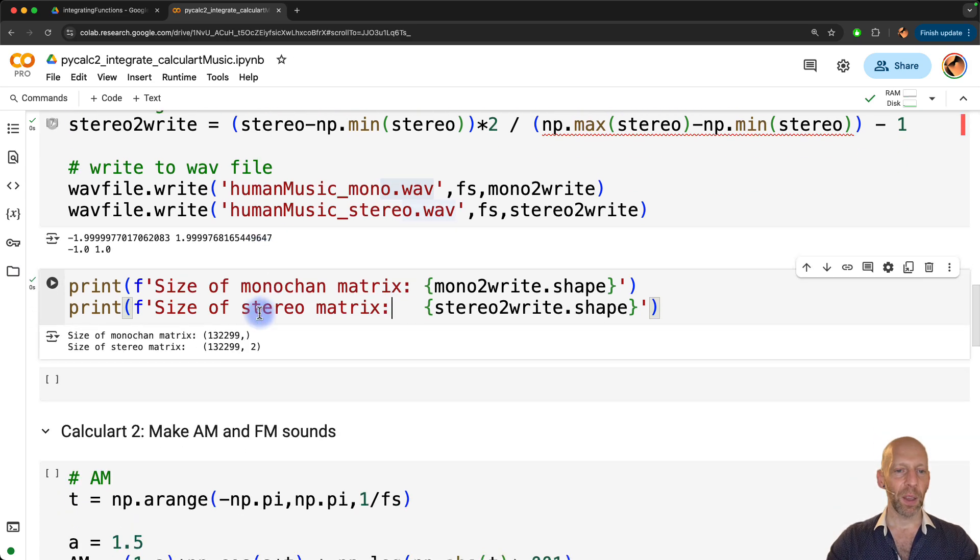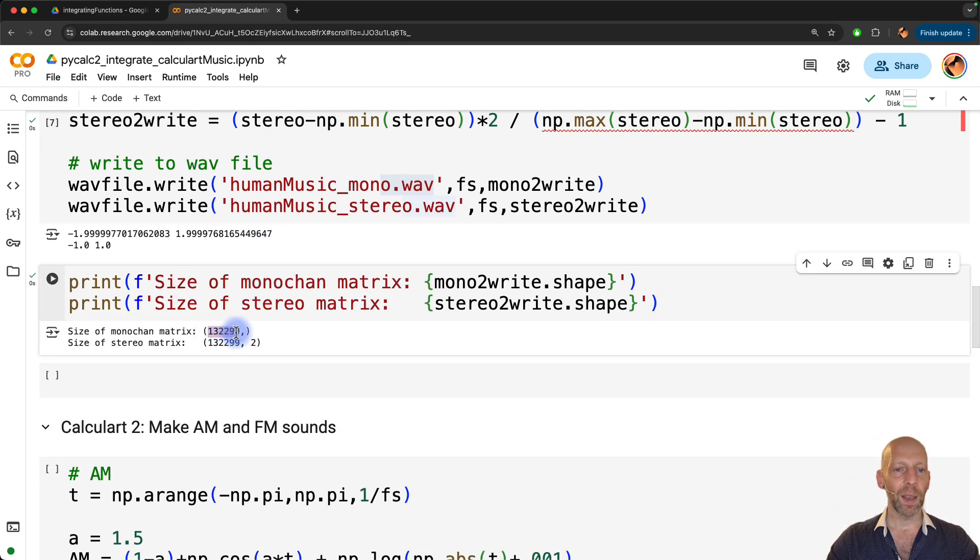And then, yeah, this is just to show you. Here we have, this is time points by channels. Now, there's no channels for a monochannel recording, or there is one channel. But in terms of data organization, we can just store it as a orientationless vector. Here we have time by channels.